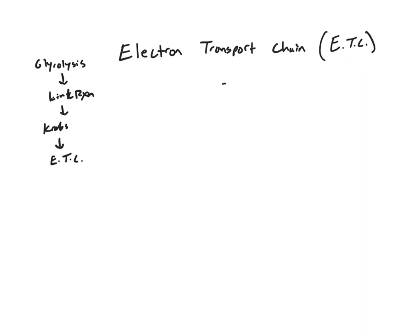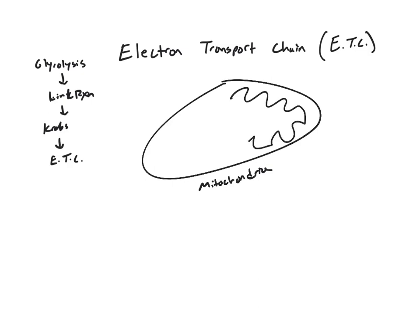Before we draw this out, let's take another look at the mitochondria. The mitochondria has a double membrane, so we have outer membrane and inner membrane.